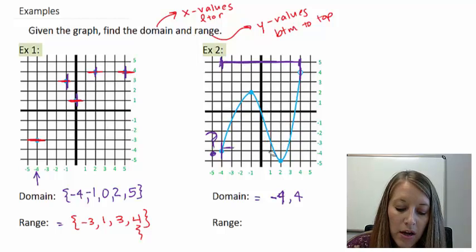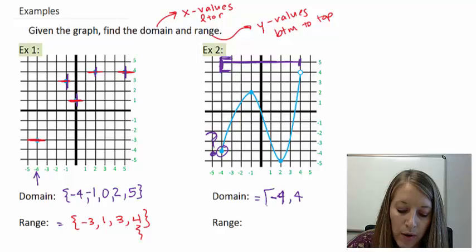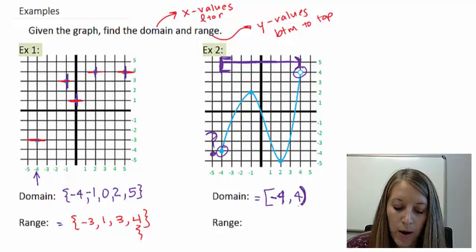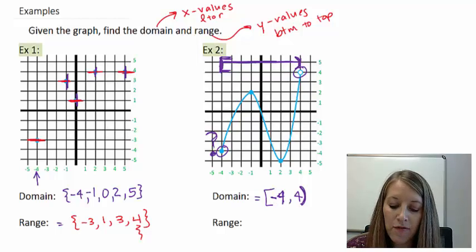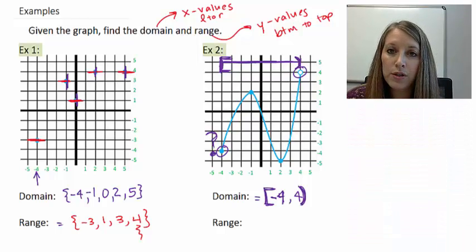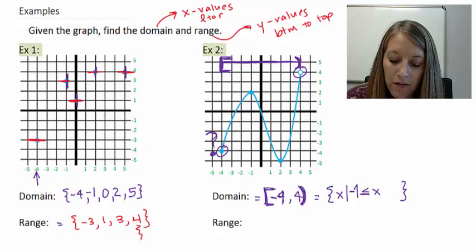Now we have to fill in our endpoints of interval notation. Since this is an actual point or a closed circle, that means we have a closed point on the left-hand part of our graph, so we do a bracket. Since this over here is an open circle, that means we do an open part of the graph on the right. So every X value between negative 4 and positive 4 is included on this graph, specifically including the endpoint on the left but not the endpoint on the right. This is interval notation, but you could also do this in set builder notation: the set of X such that X is between and including negative 4 on the left, and between but not including positive 4 on the right.